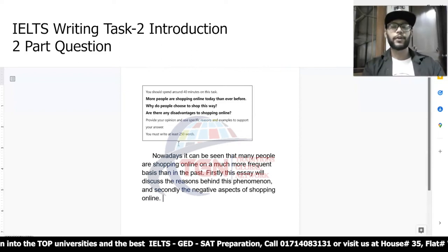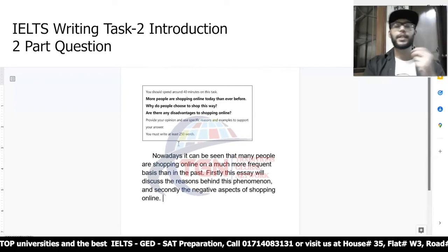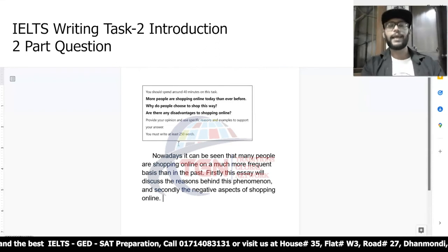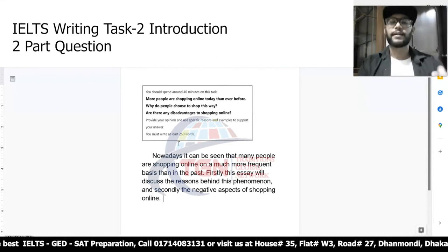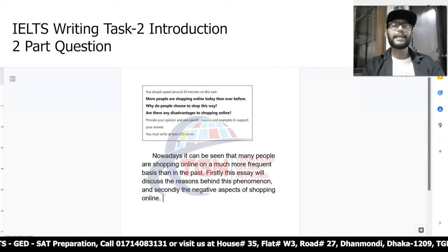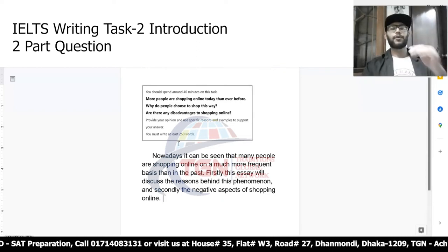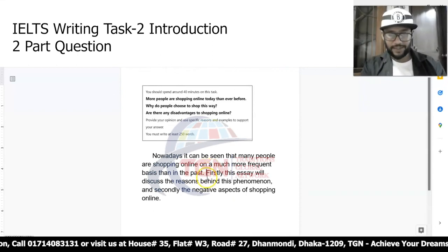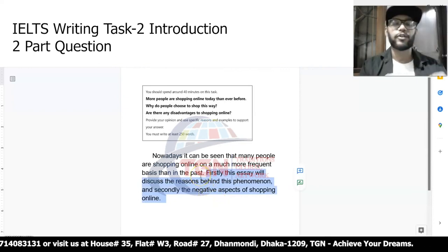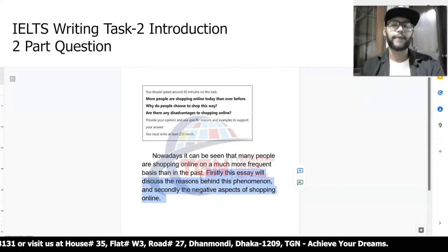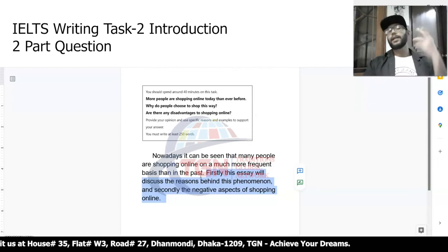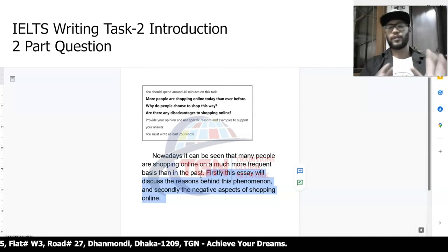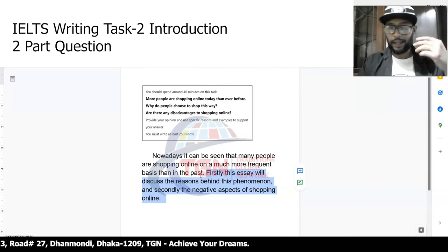That is all you have to do — introduction complete. Just a paraphrased first line and an outline sentence. This outline sentence is simply showing what I'm going to be writing about in the upcoming paragraphs. In a later video, I'll show you how to write the outline sentences for different question types. And for today, you've got the two-part question introduction.